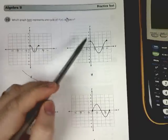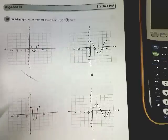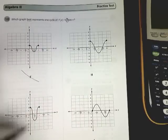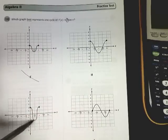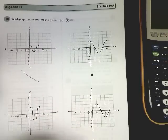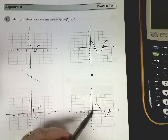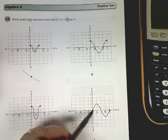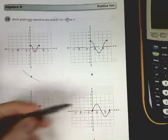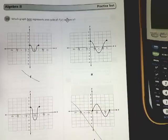We notice that H goes up to 2 and down to negative 2, so that's a possibility. G does the same thing, so that's also a choice. But J starts at 0. If you remember anything about cosine, cosine always starts on the y-axis, so that can't possibly be it either.